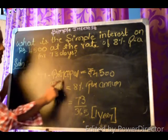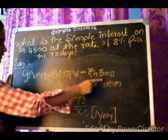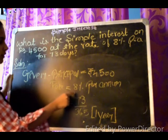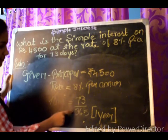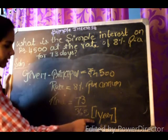So the given instructions are principal is equal to rupees 4500, rate is equal to 8% per annum, time is equal to 73 divided by 365. 365 days is equal to 1 year.